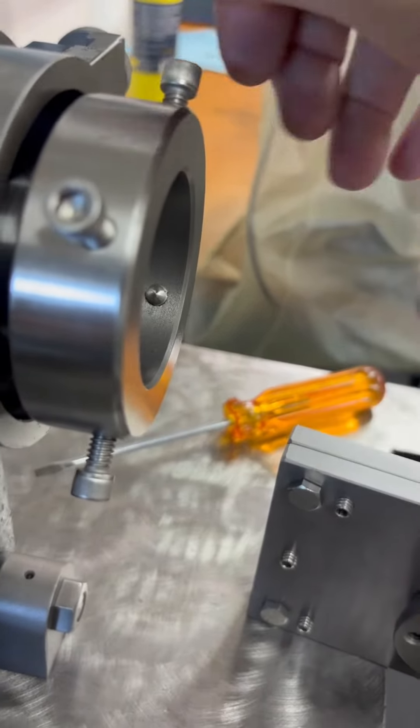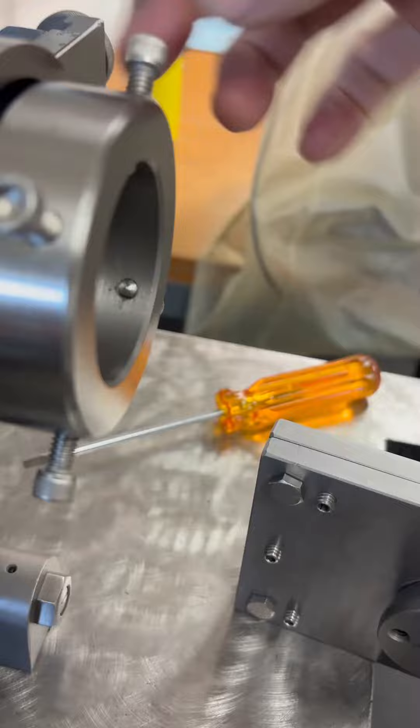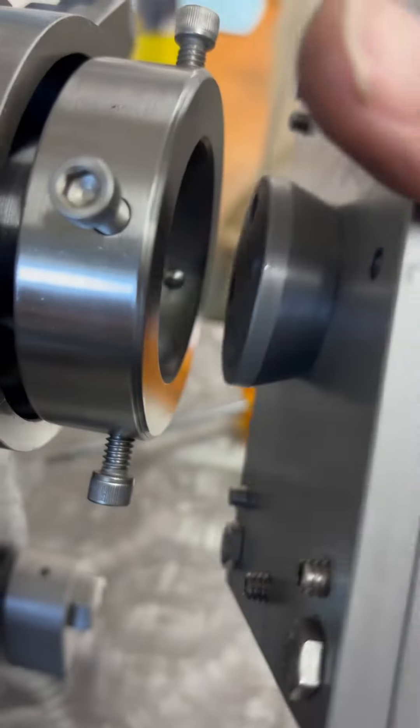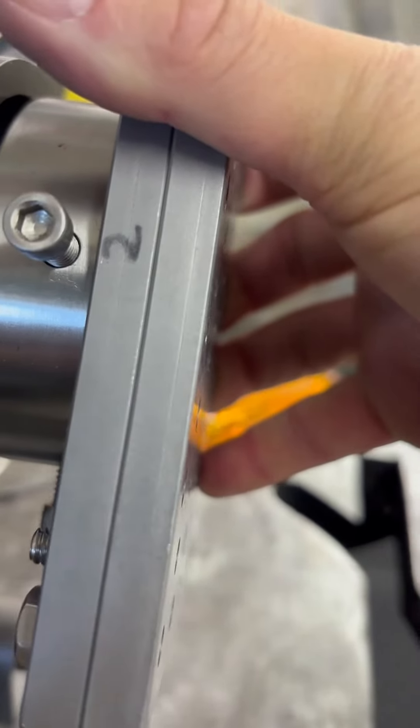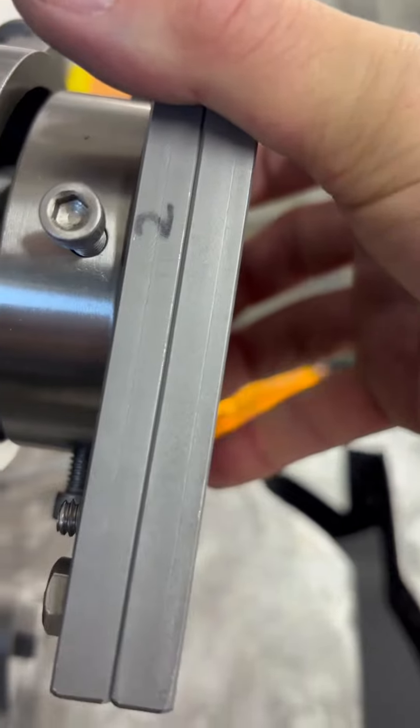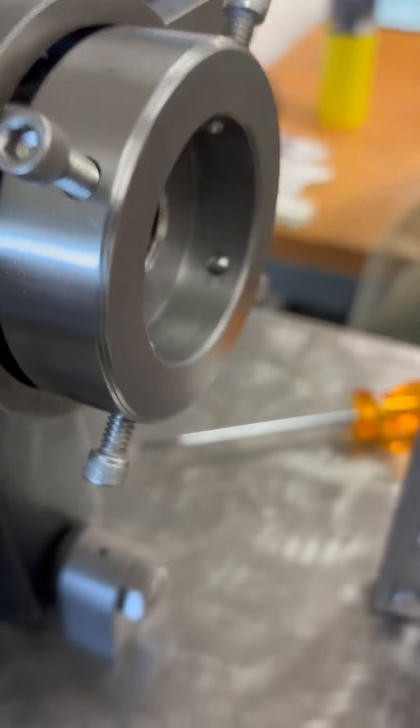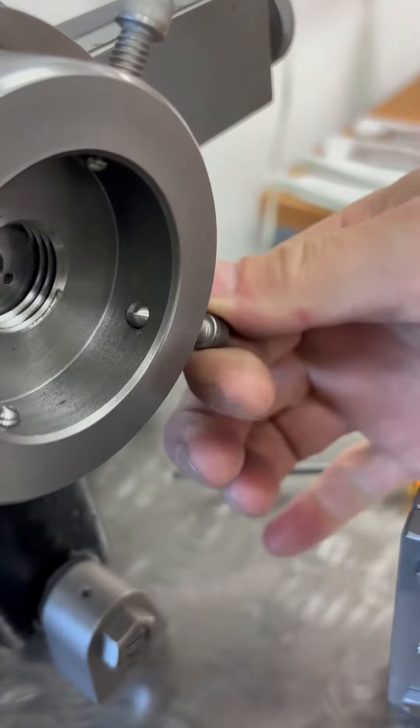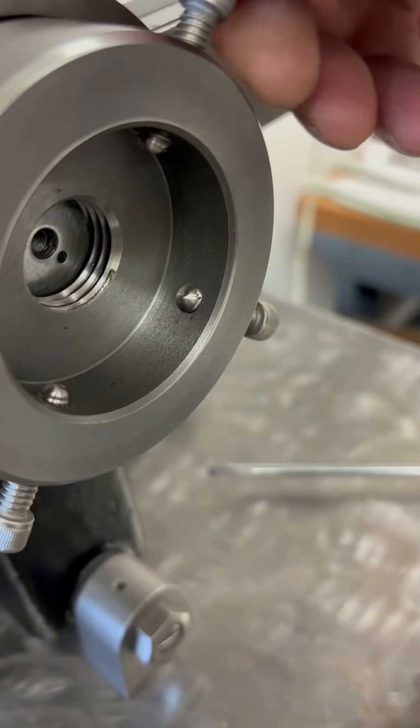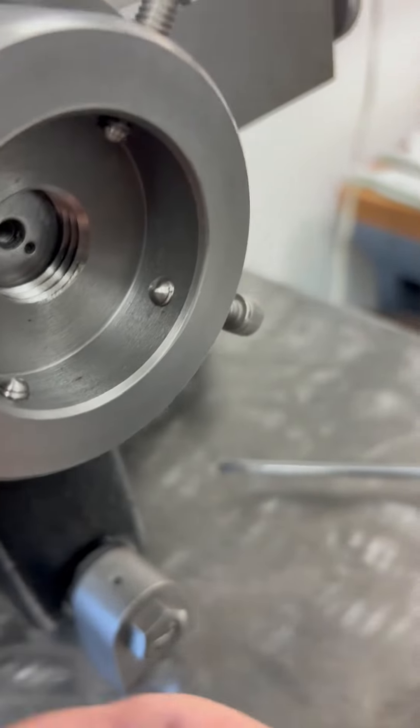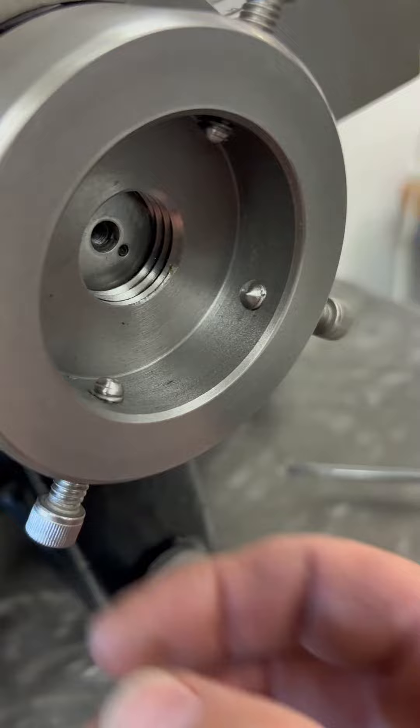This faceplate against the chuck - that taper will allow that pulling action. I also turned down the screw heads with a radius to try to minimize any type of movement.